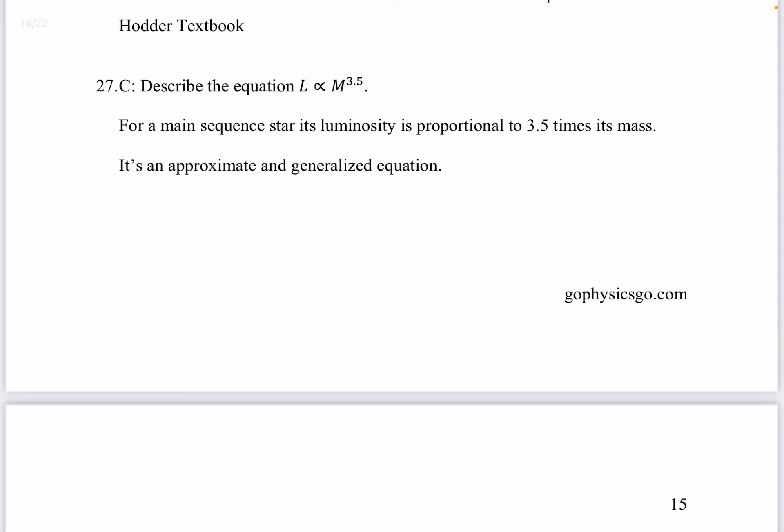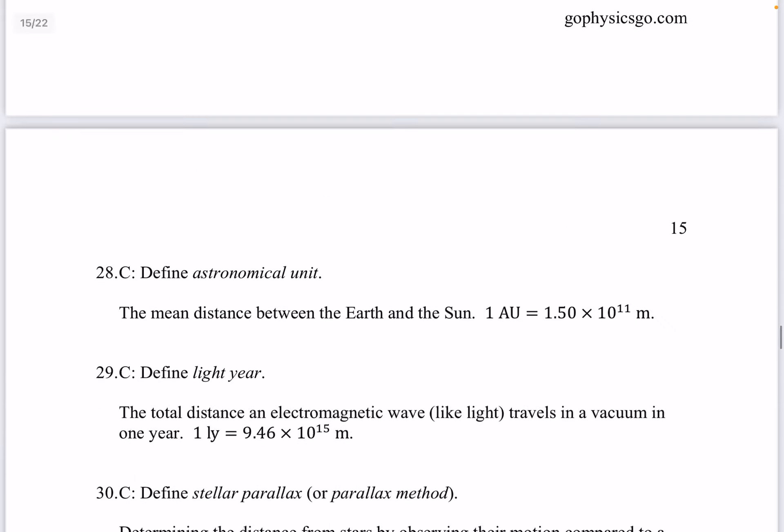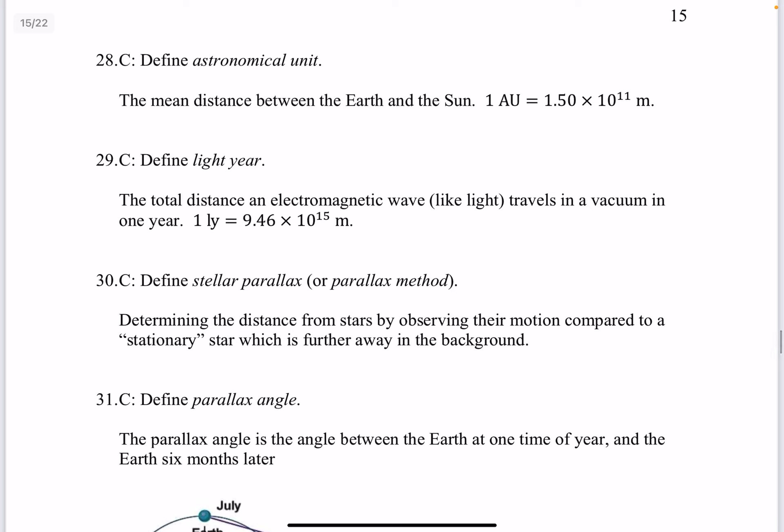Question 27. Describe the equation L is proportional to m to the 3.5. For a main sequence star, its luminosity is proportional to 3.5 times its mass. It's an approximate and generalized equation. Question 28. Define astronomical unit. This is the mean distance between the Earth and the Sun. Which is 1.5 times 10 to the 11 meters.